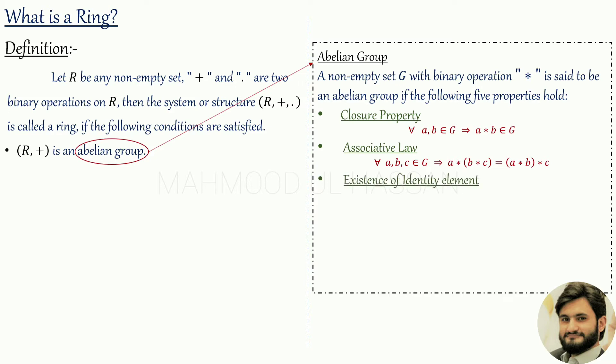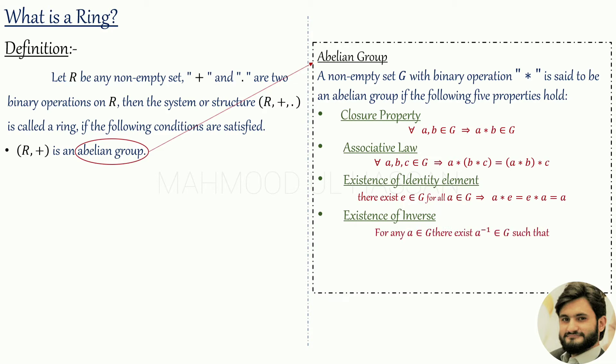The third property is existence of an identity element — the set must contain an identity element. There exists an identity element e belonging to G such that for all a belonging to G, a steric e equals e steric a equals a. The fourth condition is existence of inverse: every element must have an inverse in the set. For any a belonging to G, there must exist a-inverse belonging to G such that a steric a-inverse equals a-inverse steric a equals the identity.